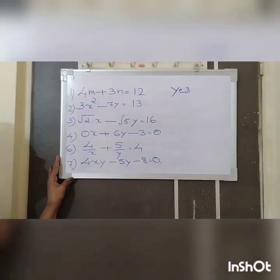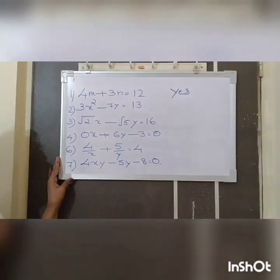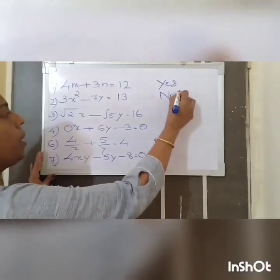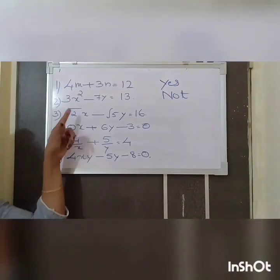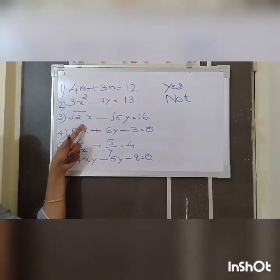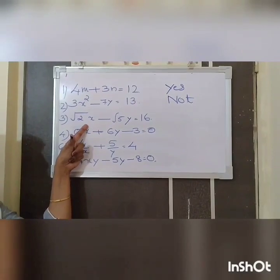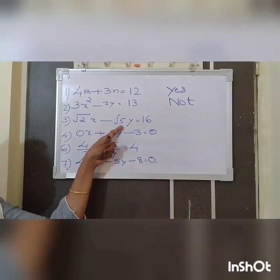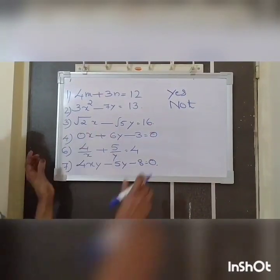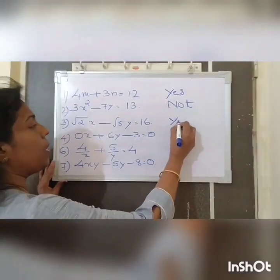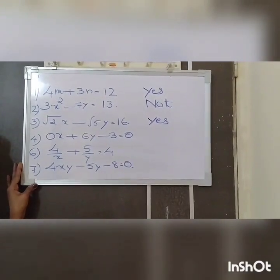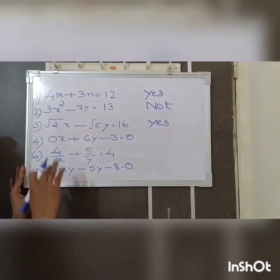The second equation: 3X squared minus 7Y equals 13. This is not a linear equation. The reason is the degree of the variable X is 2. The third equation: root 2 times X minus root 5 times Y equals 16. This is also a linear equation, because X and Y are the variables and the degree of X and Y is 1.